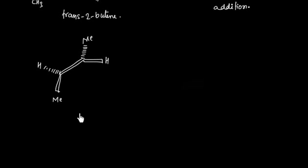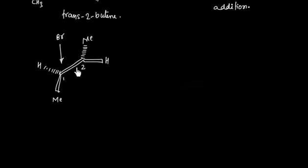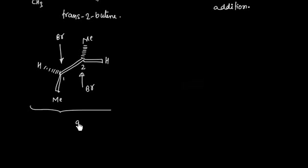Now for bromine we have two possibilities. Let us call this carbon-1 and this carbon-2. On carbon-1 bromine can attack from the top, and on carbon-2 it can attack from the bottom. This is possibility A.